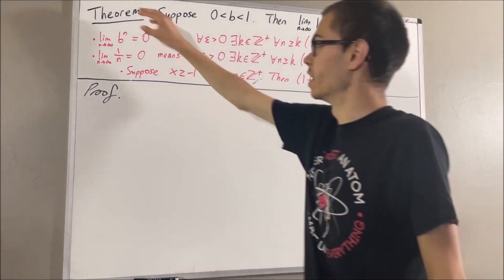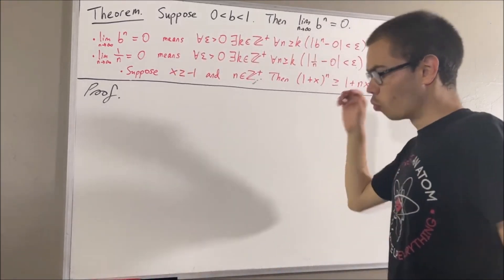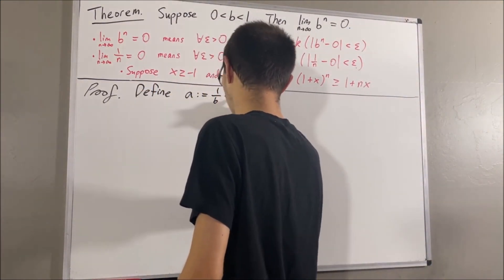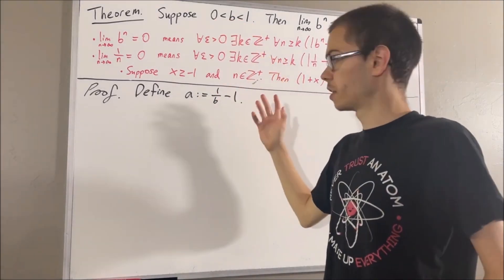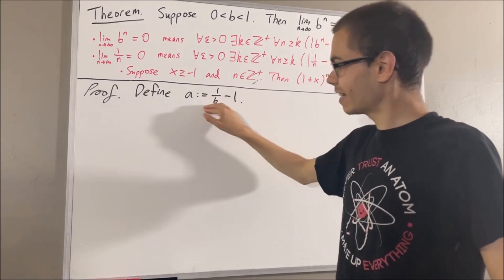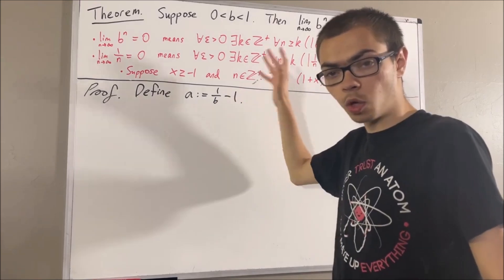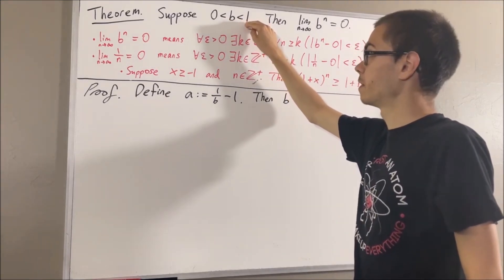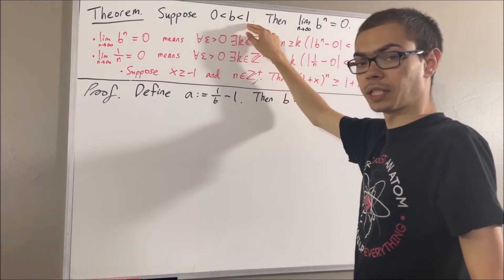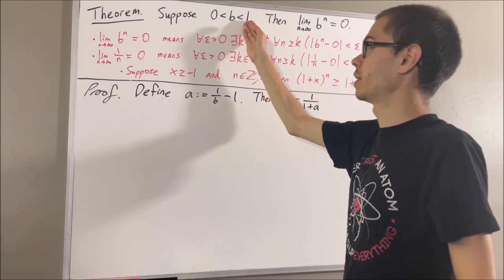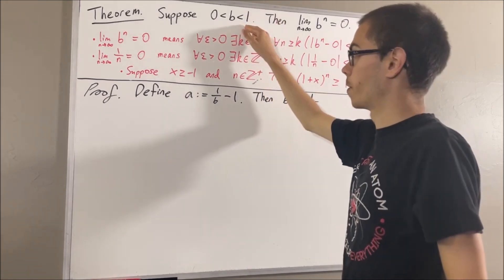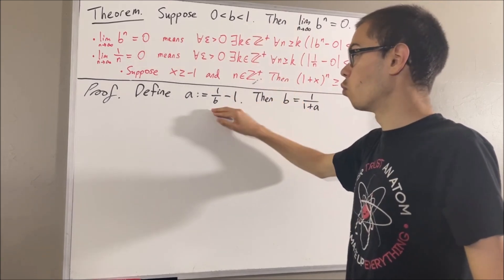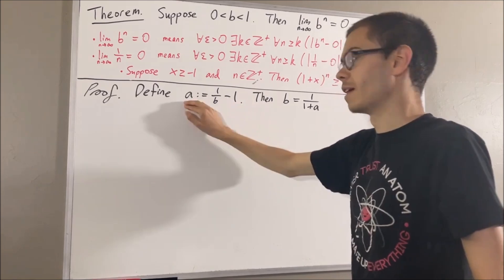So now let's get into proving this theorem. To start out the proof, we're going to define a to be 1 over b minus 1. Since b is greater than 0, 1 over b is defined, so this makes sense. If we solve for b, we get that b is equal to 1 over 1 plus a. Also, since b is less than 1 and both b and 1 are positive, taking the reciprocal switches the inequality, giving us 1 over b is greater than 1. Subtracting 1 from both sides, 1 over b minus 1 is greater than 0, or in other words, a is greater than 0.